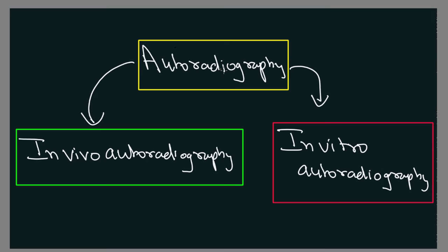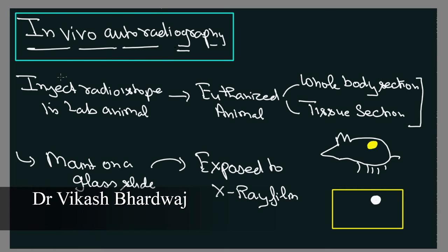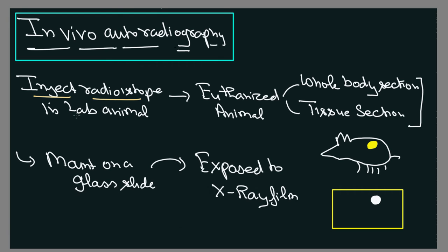Autoradiography can be classified into two types: in vivo autoradiography and in vitro autoradiography. In vivo means at the site. In the case of in vivo autoradiography, we are going to inject the radioisotope in the lab animal or any system on which you are going to do the study. After injecting your radioisotope, you euthanize the animal — you are going to kill the animals. Then you take the whole body section or the tissue section and mount these sections on a glass slide.